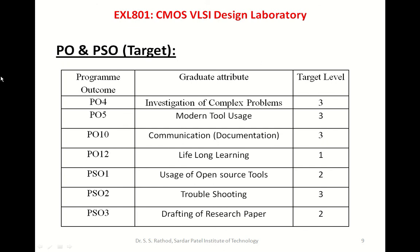In summary, the laboratory course deals with various program outcomes and program specific outcomes. Program outcome four is investigation of complex problems, target level three. PO5 is modern tool use, target level three. PO10 is communication, target level three. PO12 is lifelong learning, target level one. PSO1 is use of open source tools, target level two. PSO2 is troubleshooting, the highest target level of three. And PSO3 is drafting of research paper, moderate target level two.